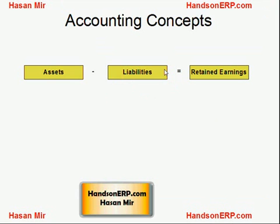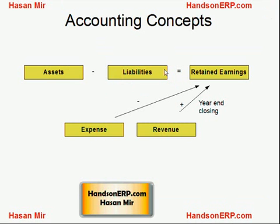Assets minus liabilities always remains equal to retained earnings. Expenses and revenue accounts are part of retained earnings in the sense that at the end of each year, you empty all the balances sitting in expense and revenue accounts and transfer those balances into the retained earnings account.